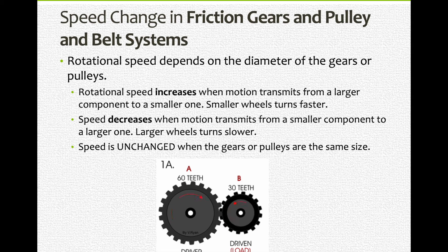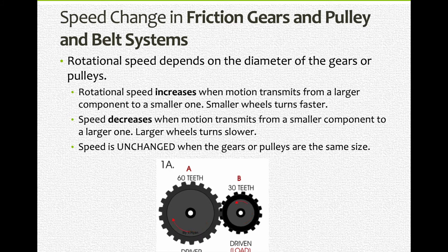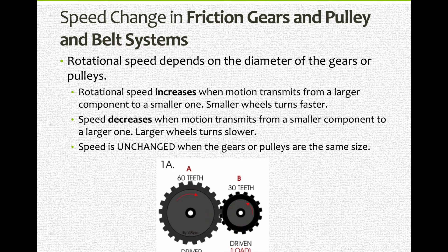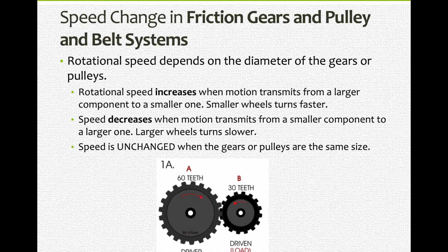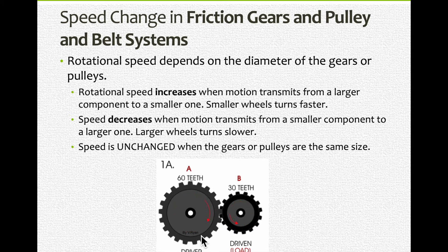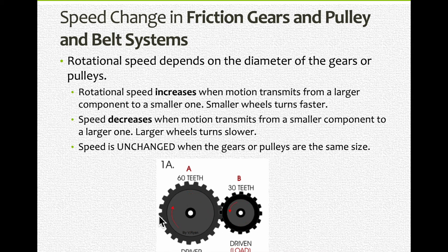If we look at friction gears and pulley-and-belt systems, there's rotation going on, and that speed depends on the diameter of the gear or the number of teeth of the gear or pulley. I'll be using different terms but they all work the same way. A larger gear will turn more slowly — it takes more time for a specific tooth to do a full turn.